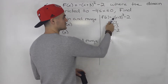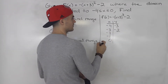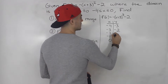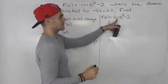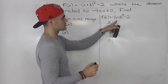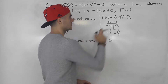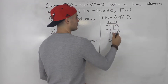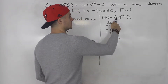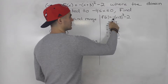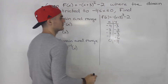If we plug in negative 2 for x, we end up with negative 3 again. If we plug in negative 1 for x, negative 1 plus 3 gives us 2, 2 squared is 4, negative 4 minus 2 gives us negative 6. If we plug in 0, we'd have 9, and negative 9 minus 2 gives us negative 11.